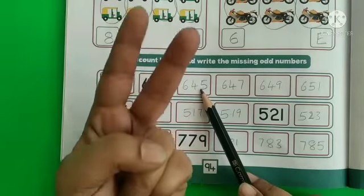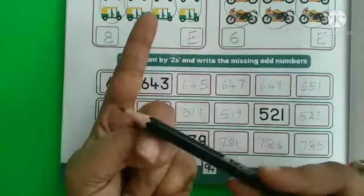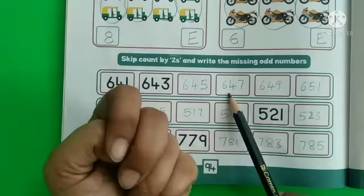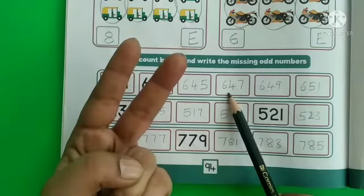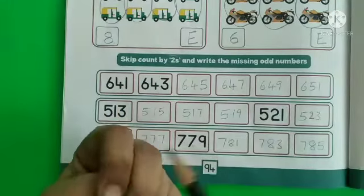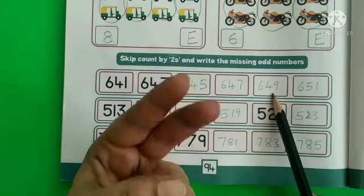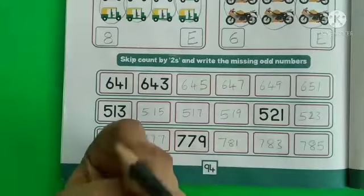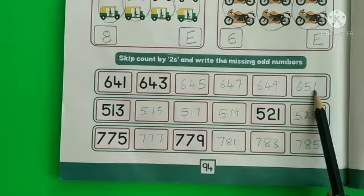Then skip twos. After 645: 646, 647. Write number 647. Once again, skip twos. After 647: 648, 649. Write number 649. Once again, skip twos. After 649: 650, 651. Write number 651.